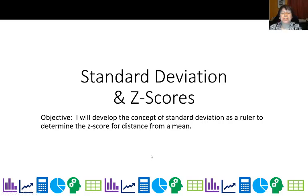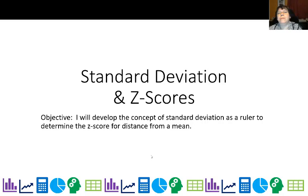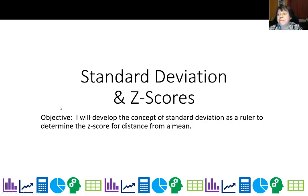Did you hear about the politician who promised that if he was elected he'd make certain that everybody had an above-average income? Maybe that's what you should do when you run for student council, promise that everyone will have above-average grades. And speaking of which, we're going to be talking about Z scores and how we can use that to determine if you're above or below average, or how far from the average you are.